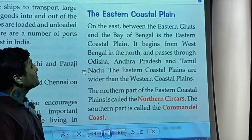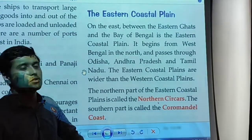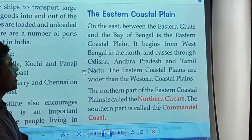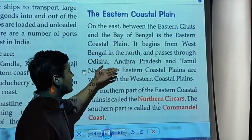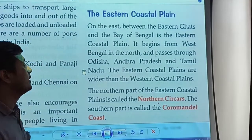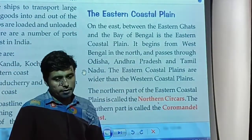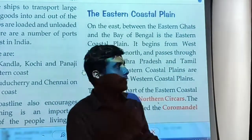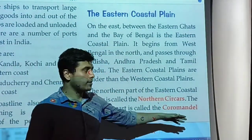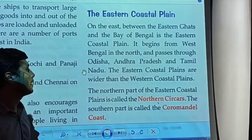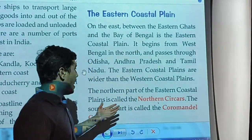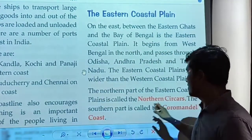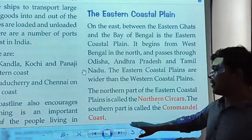After reading about the western coastal plains, let's look at the eastern coastal plain. On the east, between the Eastern Ghats and the Bay of Bengal, are the eastern coastal plains. It begins from West Bengal in the north and passes through Odisha, Andhra Pradesh, and Tamil Nadu. The eastern coastal plains are wider than the western coastal plains. The northern part is called the Northern Coastal Plains and the southern part is called the Coromandel coast.